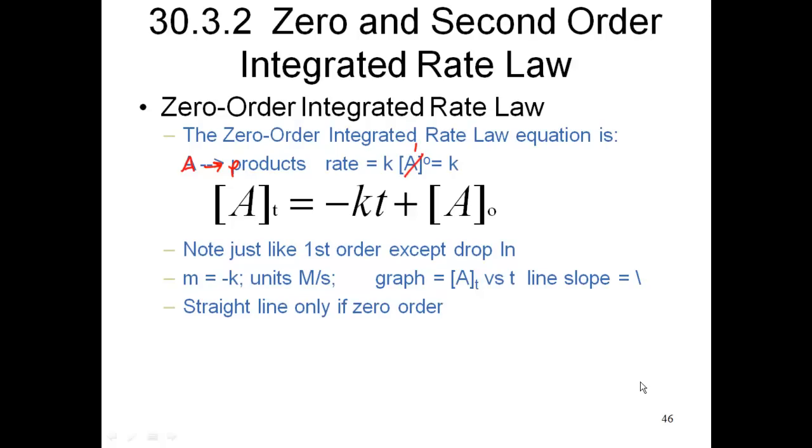We're going to learn our equation in the Y equals MX plus B format, which is the following: concentration of A_t is equal to negative K·t plus the concentration of A_0. Now, what I want you to do is look at this equation and compare it to the first order equation, and what do you notice is the difference?